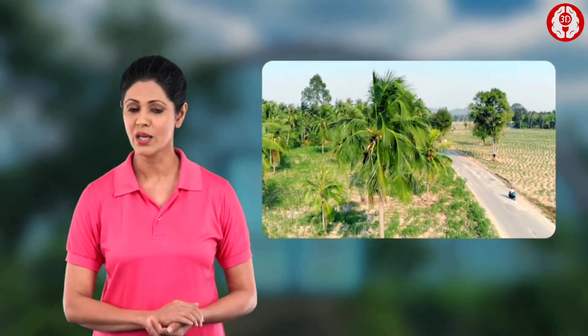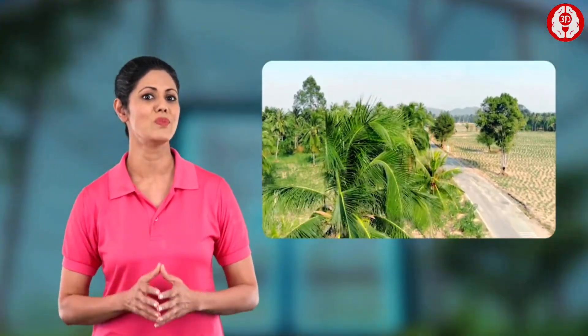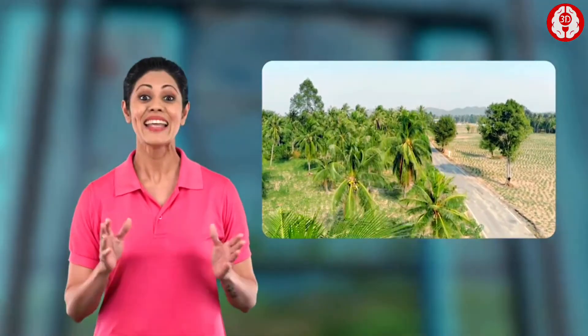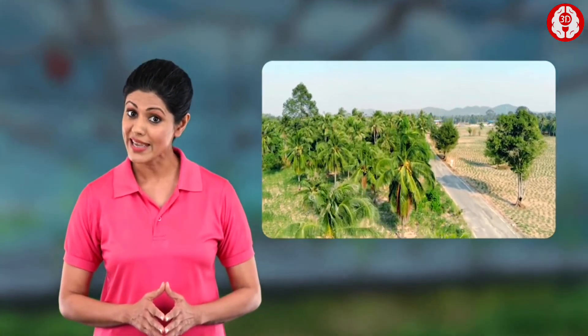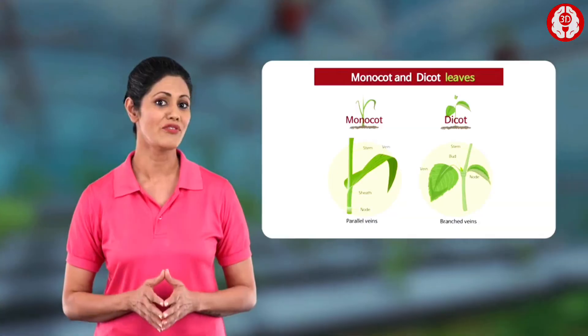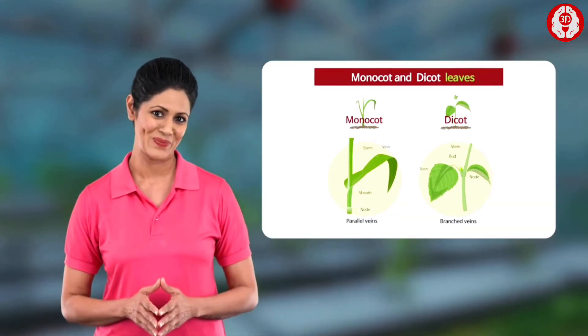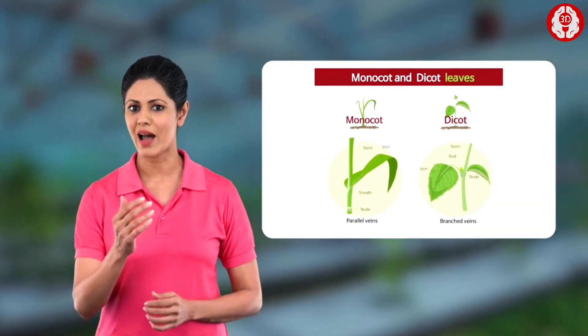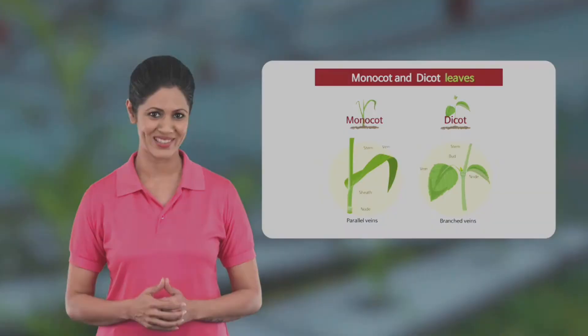We now know how dicot and monocot stems differ. But what about the structure that grows out of stems? Yes — leaves. The internal structure of the leaves of monocots and dicots also differ from each other. Learn more about this in our upcoming videos and stay tuned.